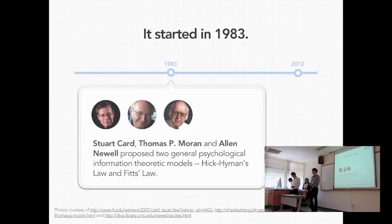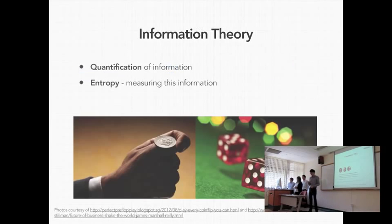So all this began in 1983, where these three young handsome men were here: Stuart Card, Thomas Moran, and Allen Newell proposed two general psychological theoretic models, the Hick-Hyman's law and the Fitts law. But before I delve further into the topic, I have to give you a brief overview of the information theory.